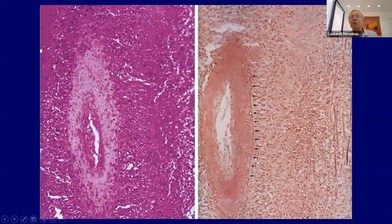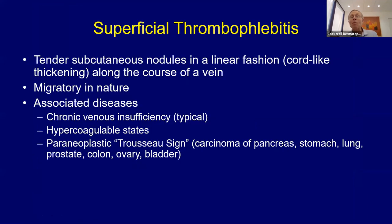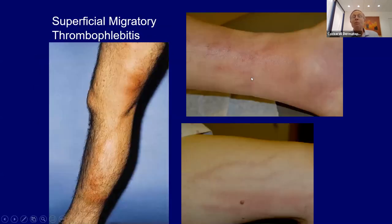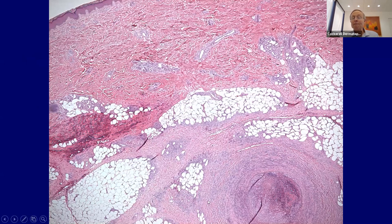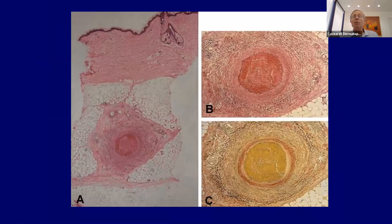With an elastic tissue stain, you can see the elastic in the wall of the blood vessel, confirming it's an artery rather than a vein. Superficial thrombophlebitis looks histologically very similar to PAN — it picks out a blood vessel, this time a vein. Rather than livedo reticularis and ulcers, it tends to present more like a cord, with inflammation migrating along the course of the vein. It tends to be migratory, associated with chronic venous insufficiency, hypercoagulable states, and paraneoplastic processes — the Trousseau sign associated with cancers.